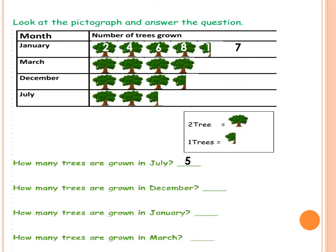How many trees are grown in December? December, it's the third one. Let's count together: 2, 4, 6 and 1. 6 and 1 equals 7. Excellent, Primary 2. How many trees are grown in January? The first one. We answered it already, which is 9.